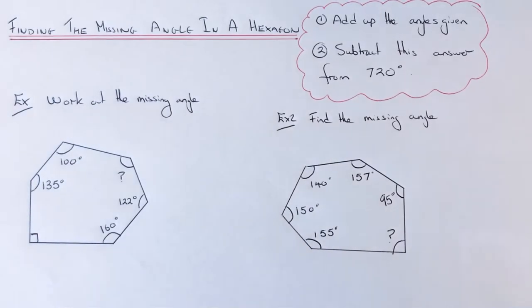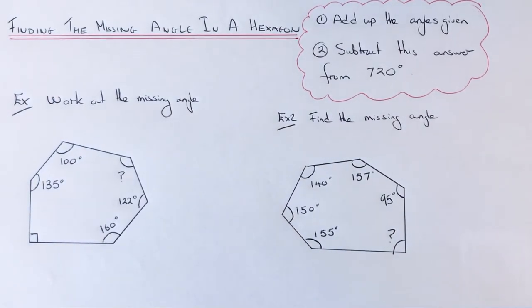Hi guys, welcome back. This is Maths 3000. Today I'm going to show you how to work out a missing angle in a hexagon. To do this, you need to follow two steps.